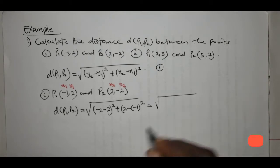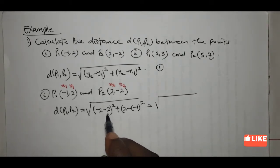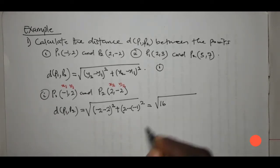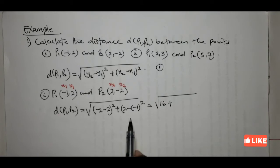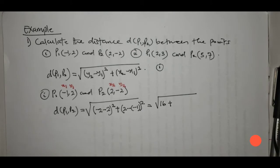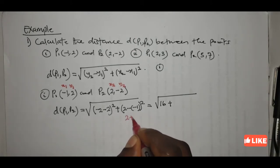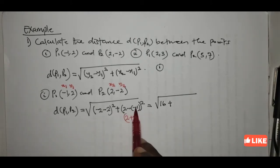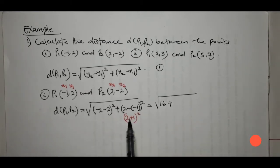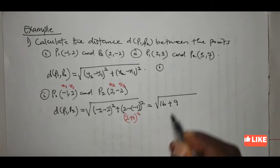This gives us the square root of (-2 minus 2) all squared plus (2 minus (-1)) all squared. So -2 minus 2 is -4, and -4 squared is 16. Then 2 minus (-1) gives 2 plus 1, because minus times minus is plus, so that is 3, and 3 squared is 9. Therefore the distance is the square root of 16 plus 9, which is the square root of 25, equal to 5.